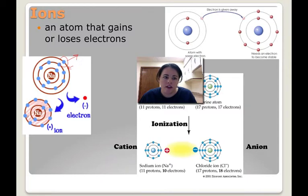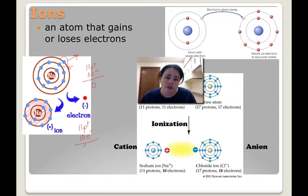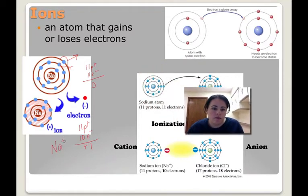So sodium will kick out its last electron. That makes it drop down one shell to 2 shells, and now it has 8 electrons in its valence shell and it's stable. But in the process, it went from 11 protons and 11 electrons — neutral — to having 11 protons and 10 electrons. Now it has 1 more positive than negative, giving it a positive 1 charge. We write it as sodium plus 1, or just sodium with a plus.